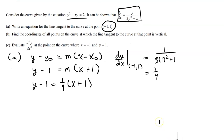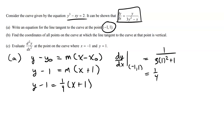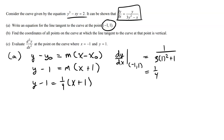Let's look at question two. It says: find the coordinates of all points on the curve at which the tangent line to the curve at that point is vertical. So Part B, I'm looking for a coordinate (x, y) on the curve for which the line tangent to the curve is vertical.